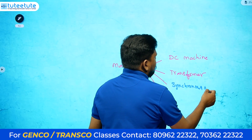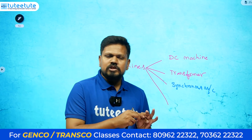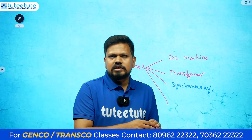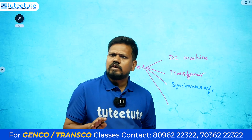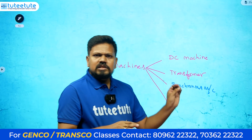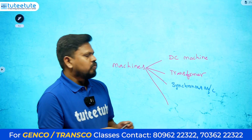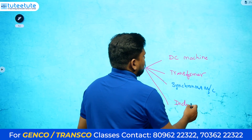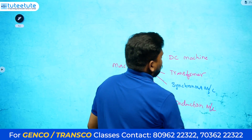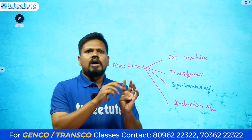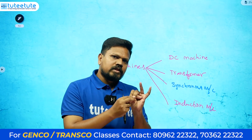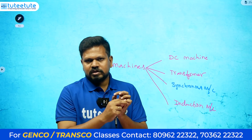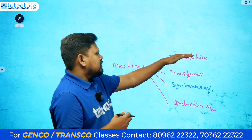For synchronous machines, only three things are required for the mechanical department exam: operation, operating principle, and construction. Similarly for induction machines, the exam will definitely ask about operation, operating principle, and construction. For DC machines, you additionally need to know the types; for the remaining machines, the same three areas apply.